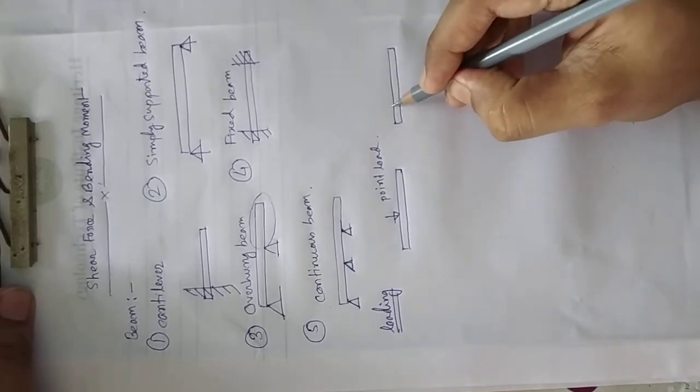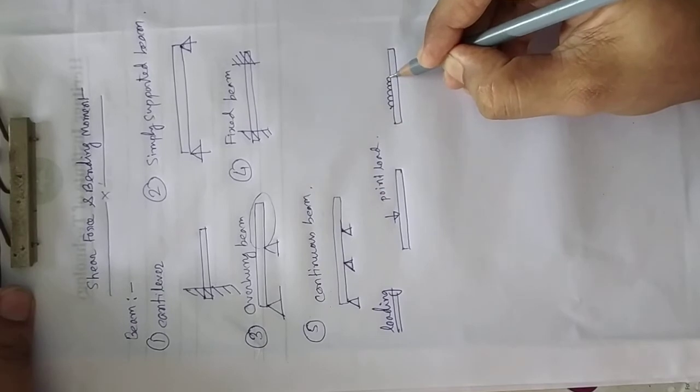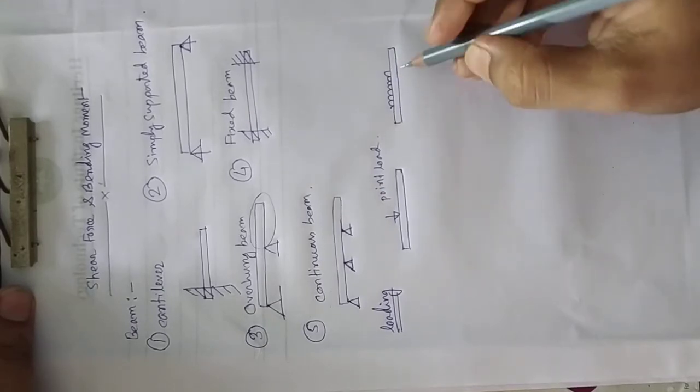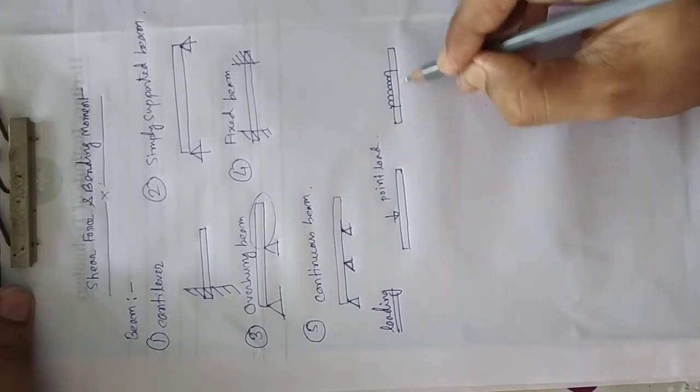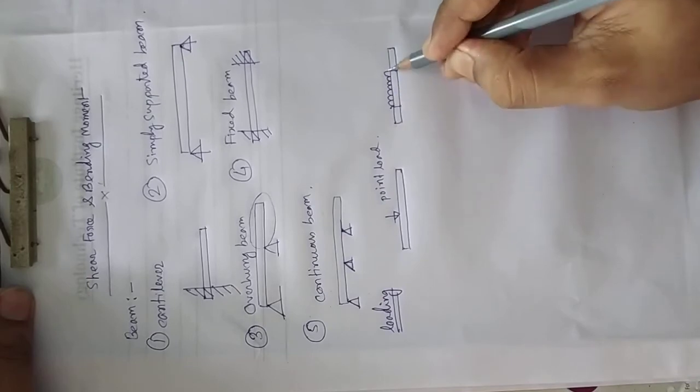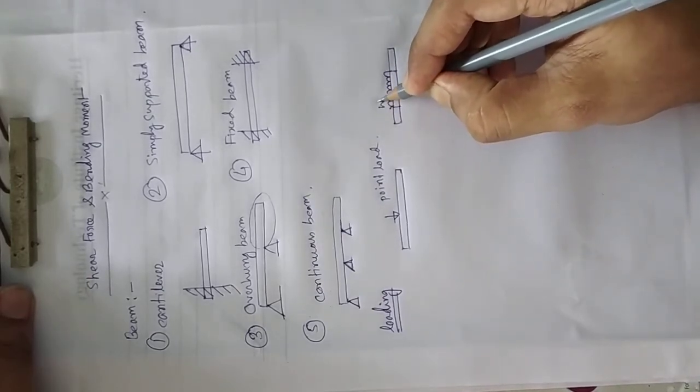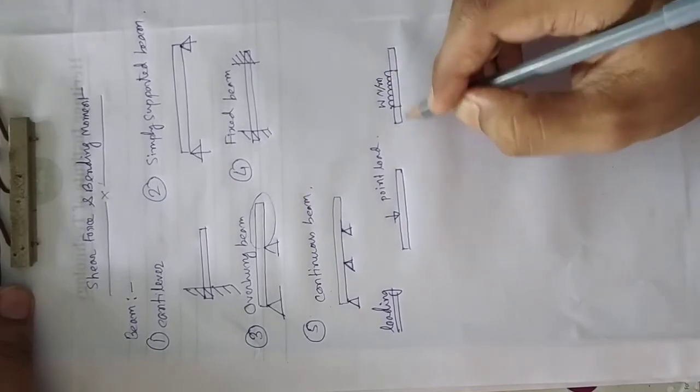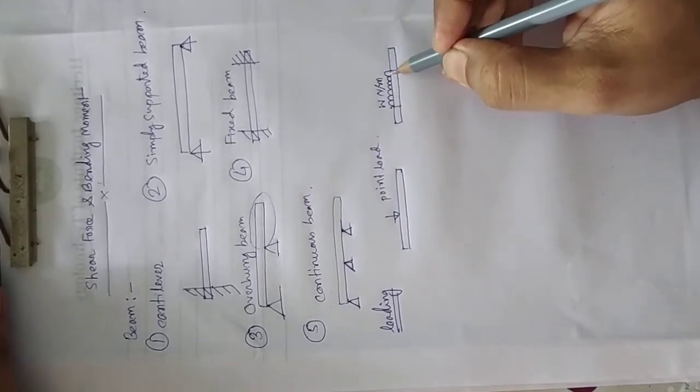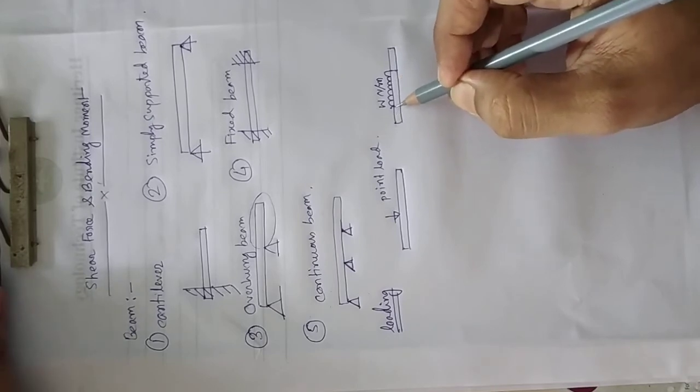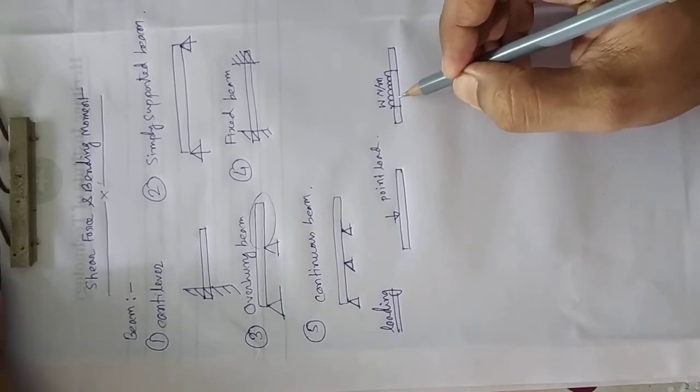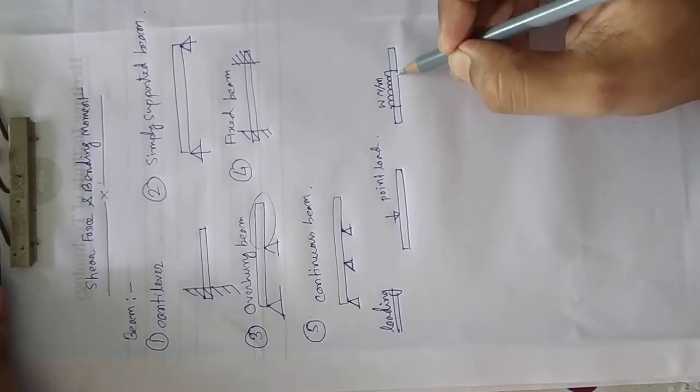When on the beam some force is uniformly distributed over a particular area, here on this much area, this load is uniformly distributed and it is shown as w newton per meter. There are different units that may be applicable. So a particular weight is uniformly distributed throughout this area.